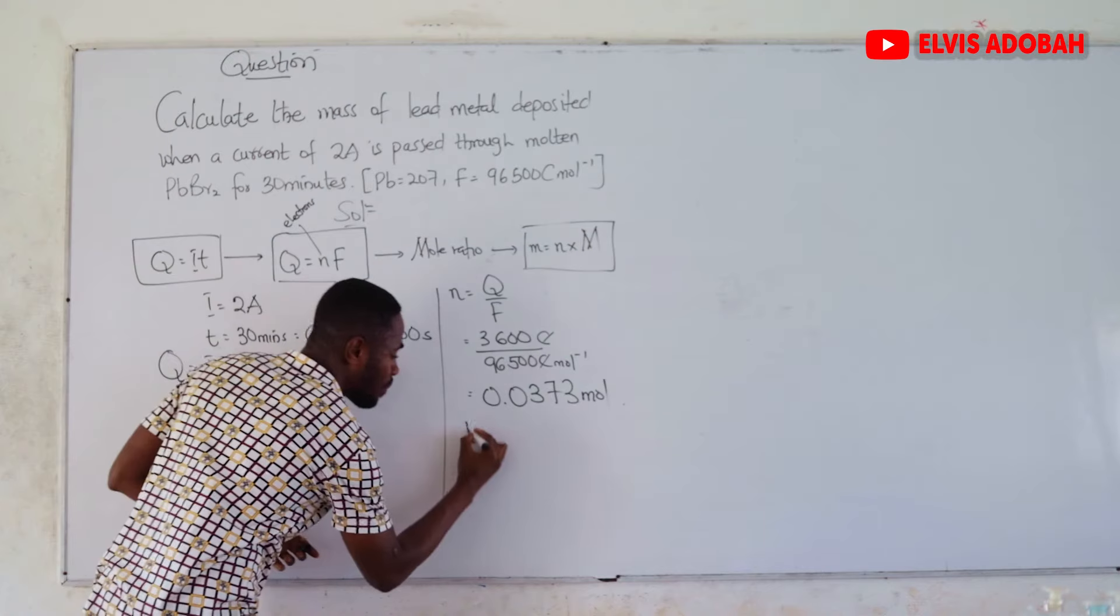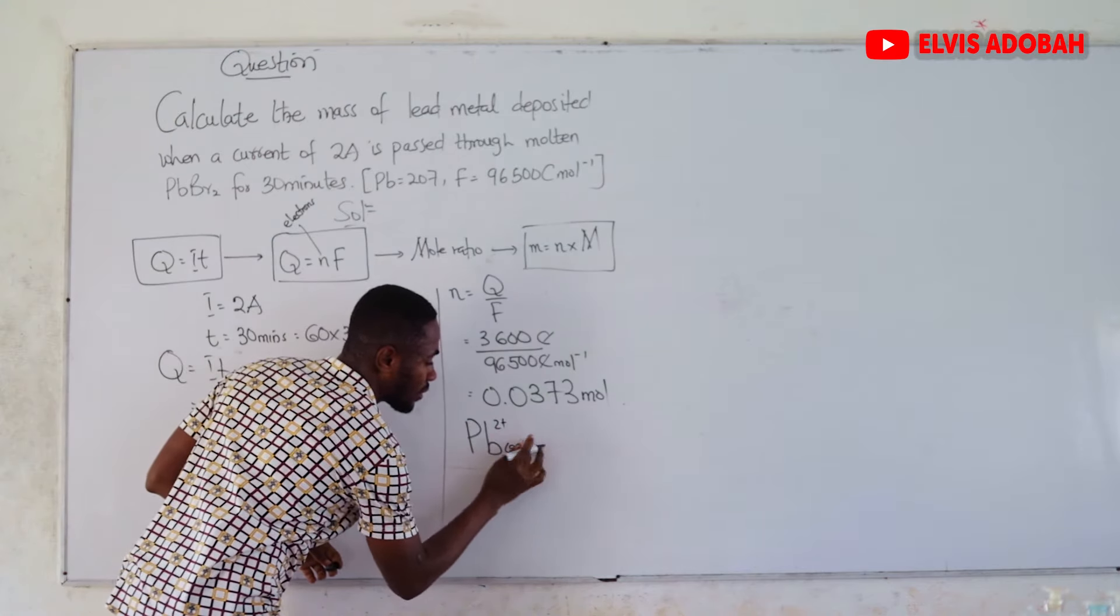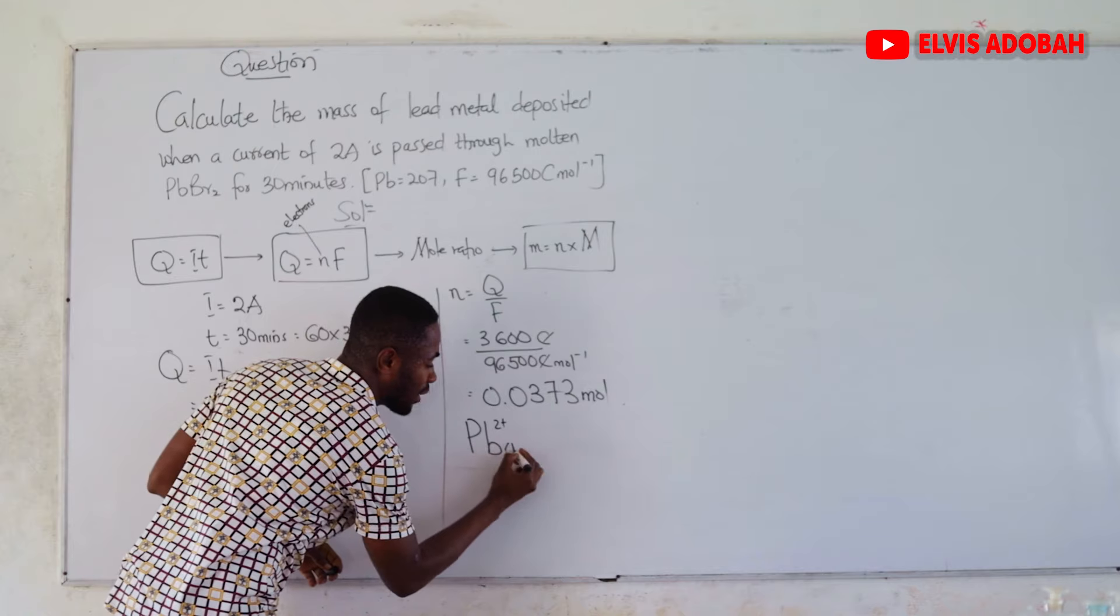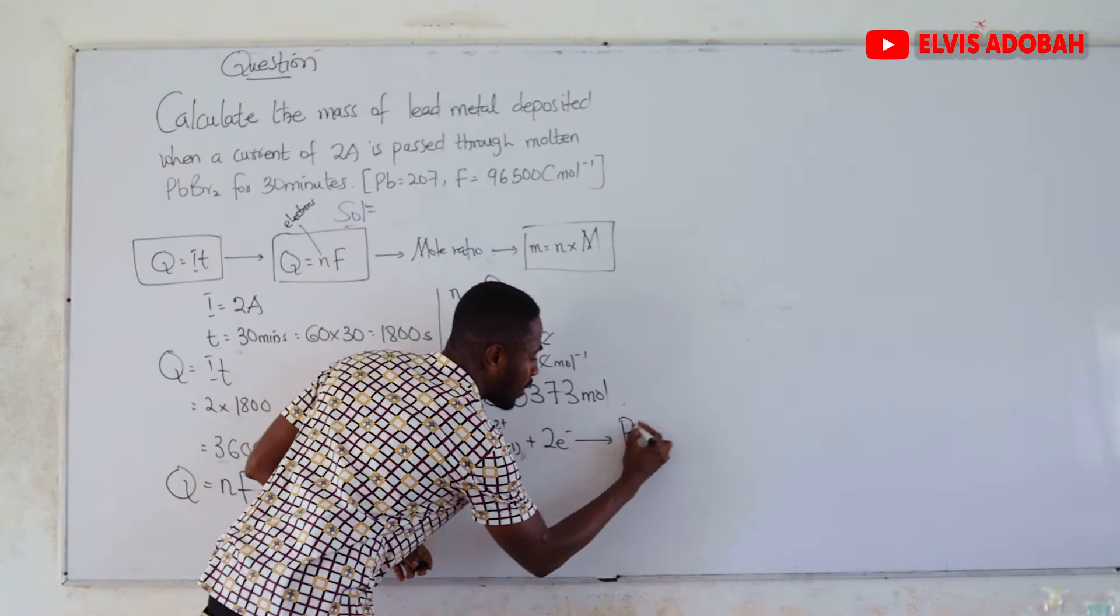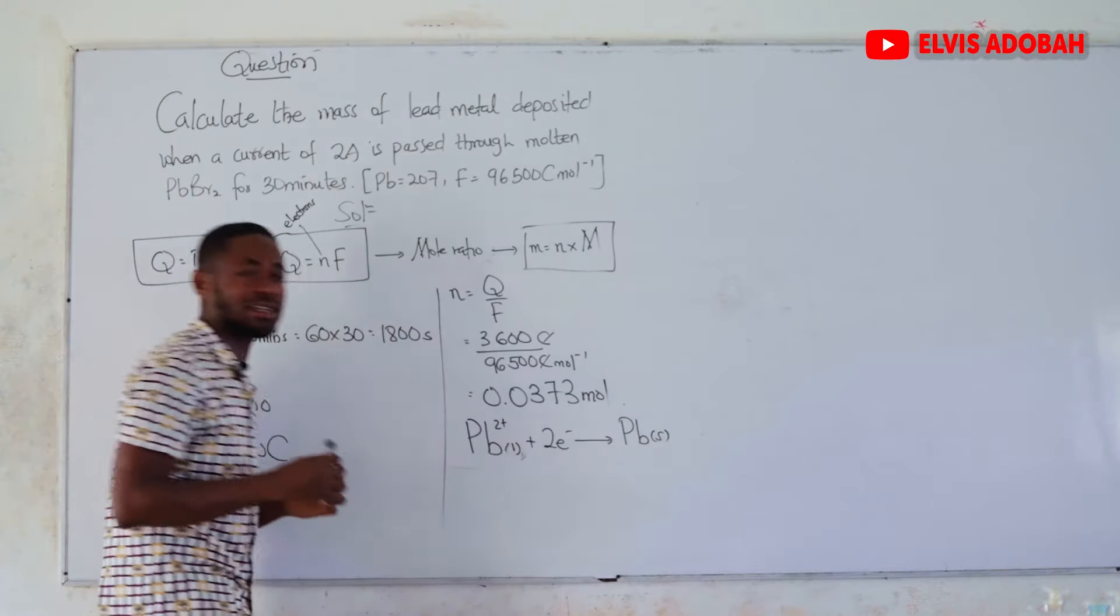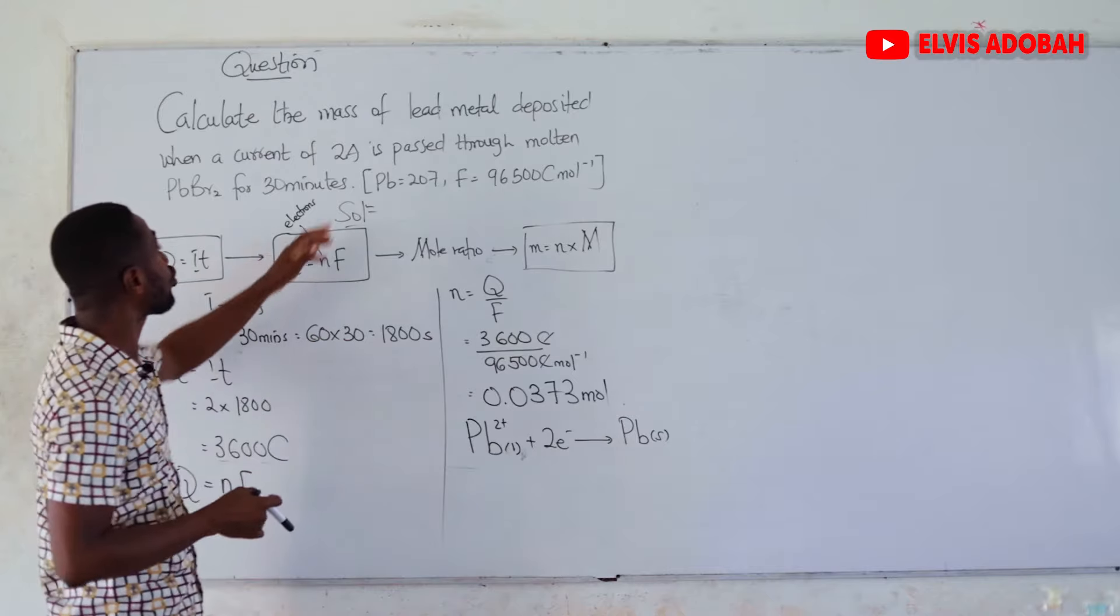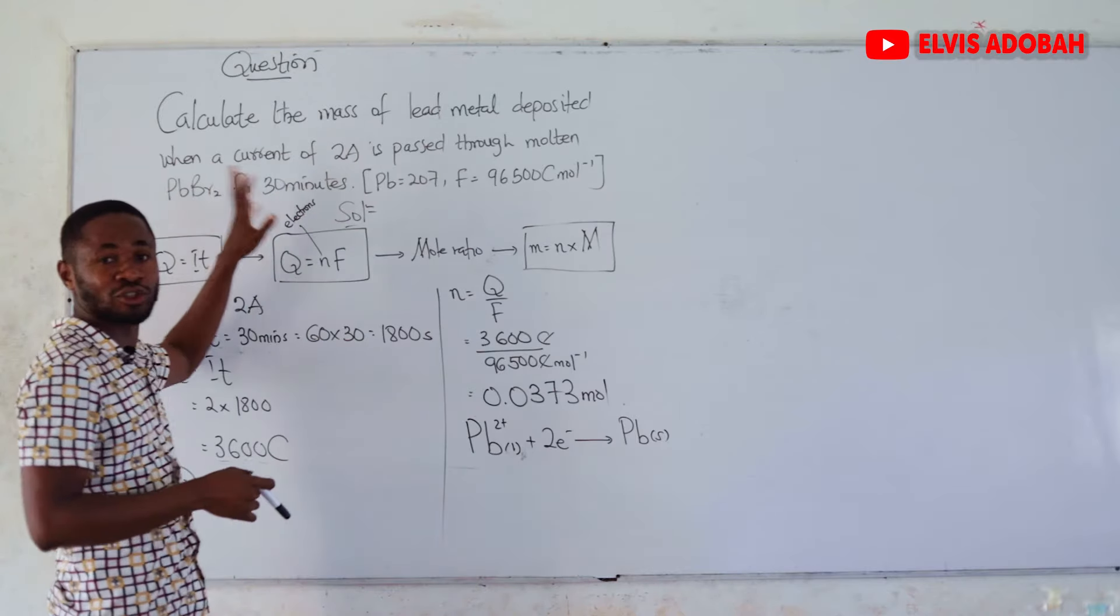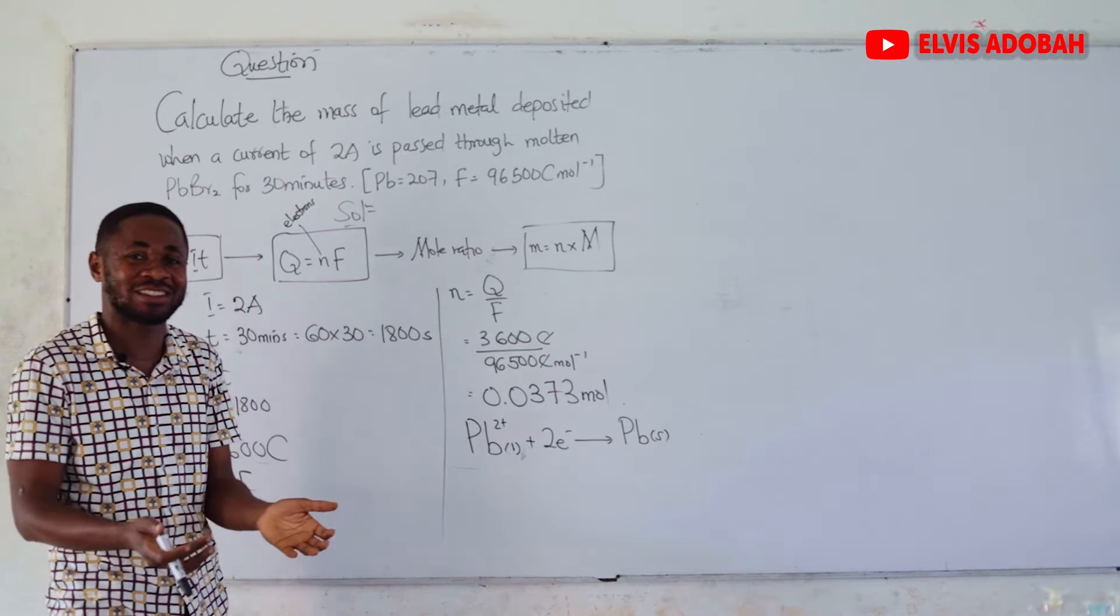actually in our electrolytic cell, will break down into Pb2+ and 2Br- ions. At the cathode, we will have Pb2+ in the liquid state, accepting 2 electrons to form Pb in the solid state.